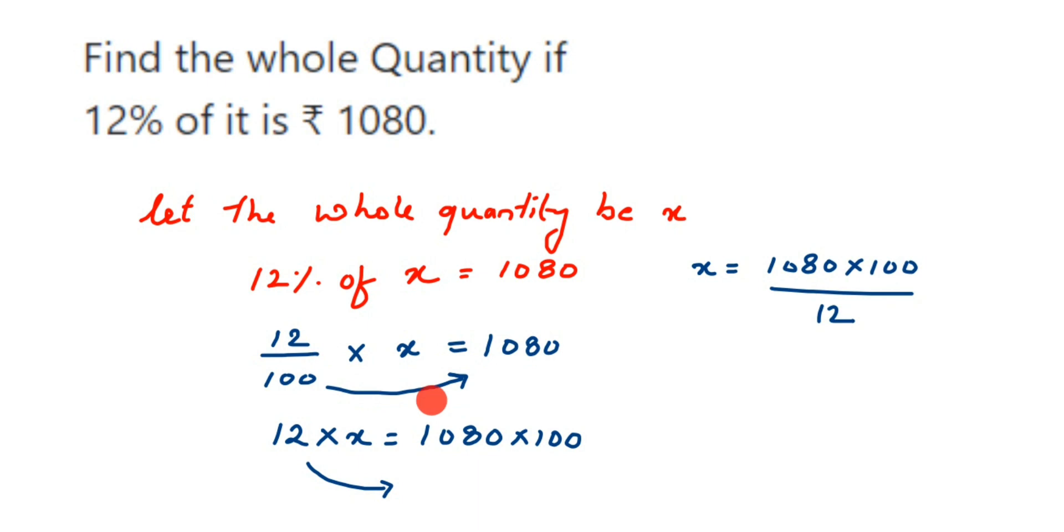Now you can cancel the numbers. Cancel 12 and 1080. So 12 ones are 12. I'm directly cancelling in 12 table because 108 goes in 12 table. 12 nines are 108, so 12 nineties are 1080. So I'm directly cancelling in 12 table. If you want to cancel this in other tables you can do that. You will get the same answer at the end.